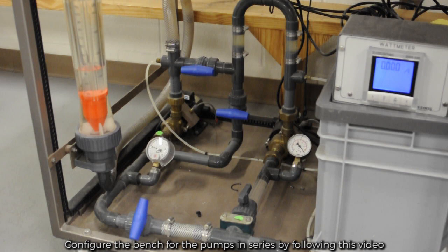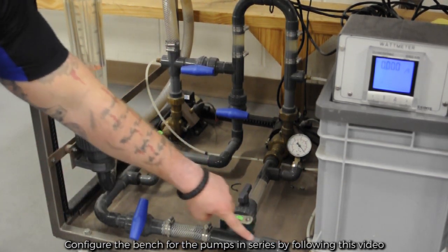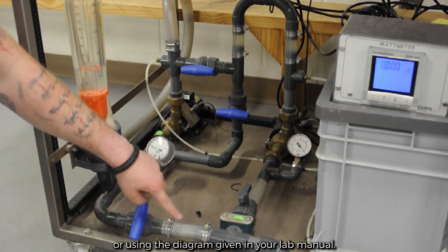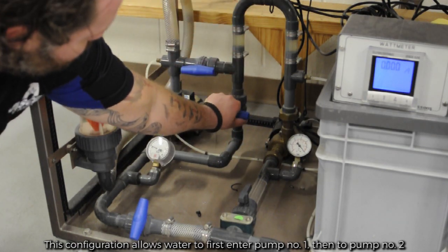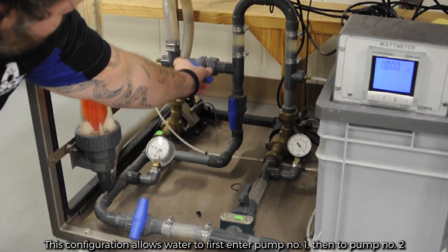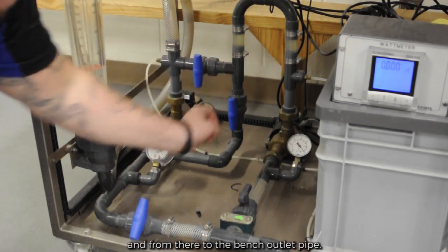Configure the bench for the pumps in series by following this video or using the diagram given in your lab manual. This configuration allows water to first enter pump number one, then to pump number two, and from there to the bench outlet pipe.